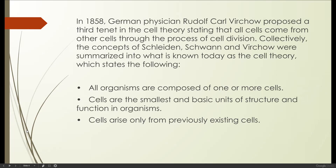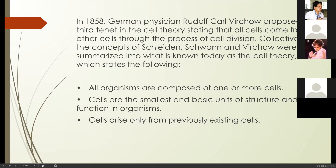The three statements of cell theory are: first, all organisms are composed of one or more cells — this is the concept confirmed by Schleiden and Schwann. Second, cells are the smallest basic units of structure and function in an organism — also confirmed by Schwann and Schleiden. Third, cells arise only from previously existing cells — that is according to Virchow. Any questions so far?